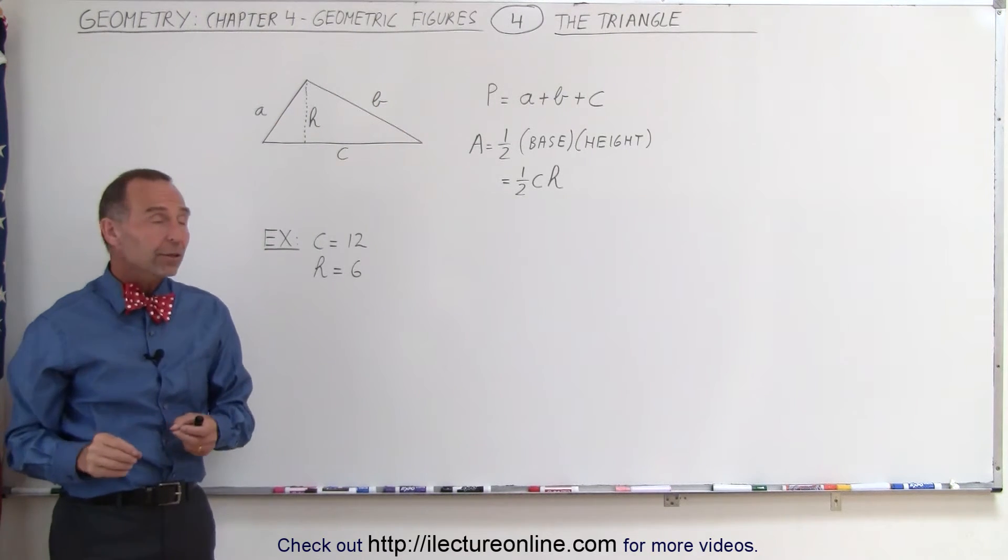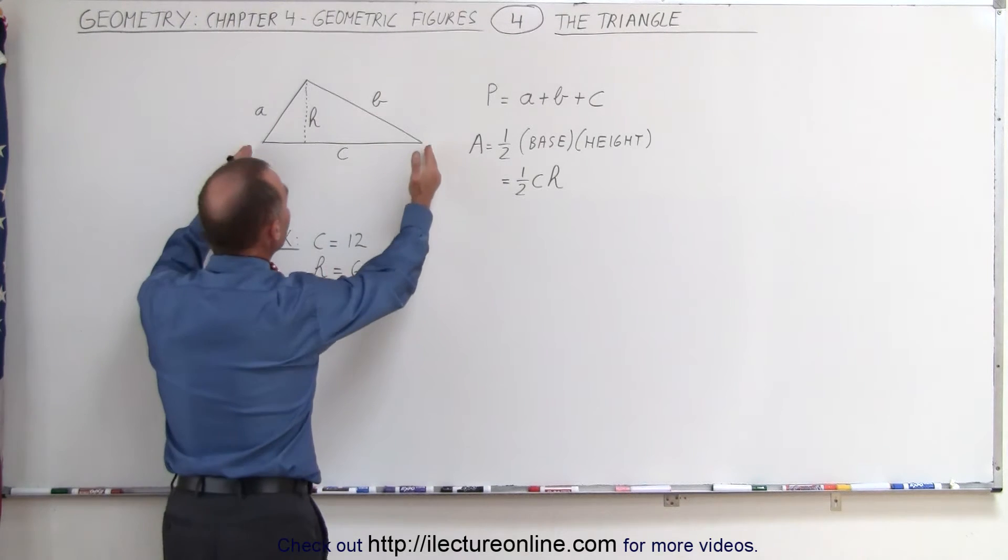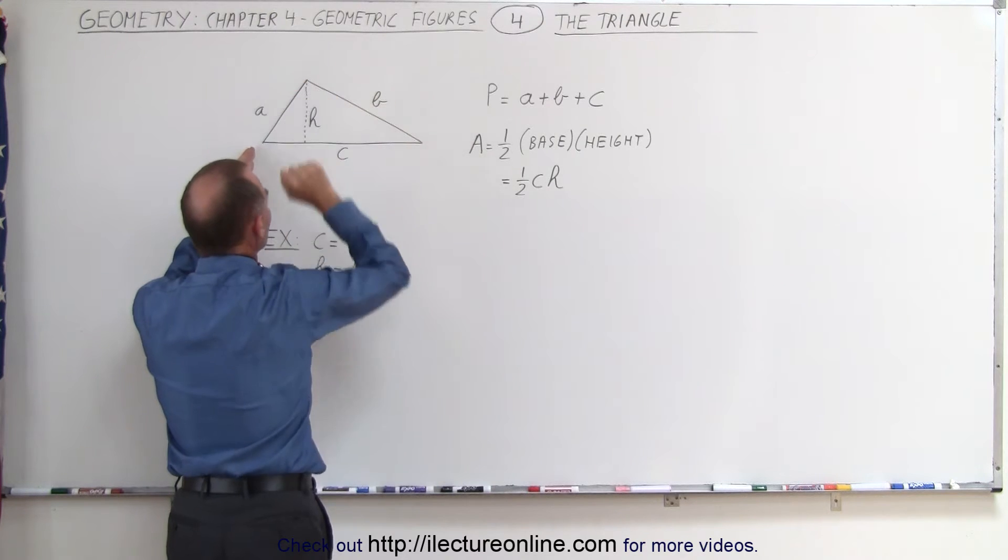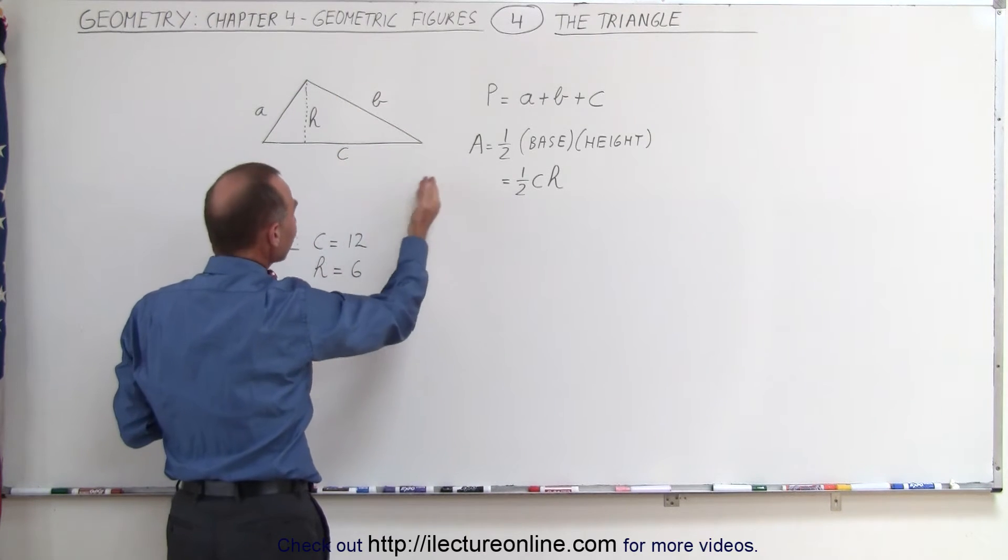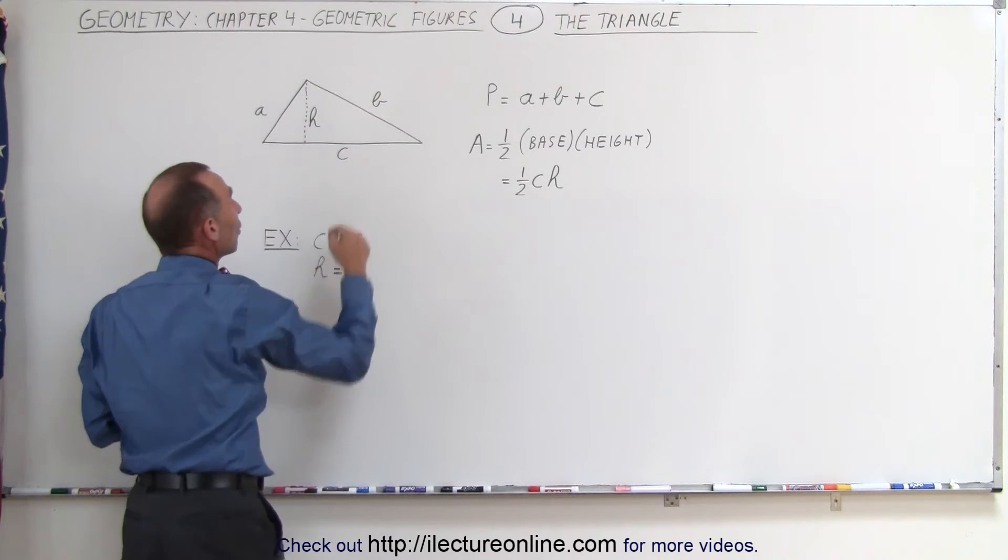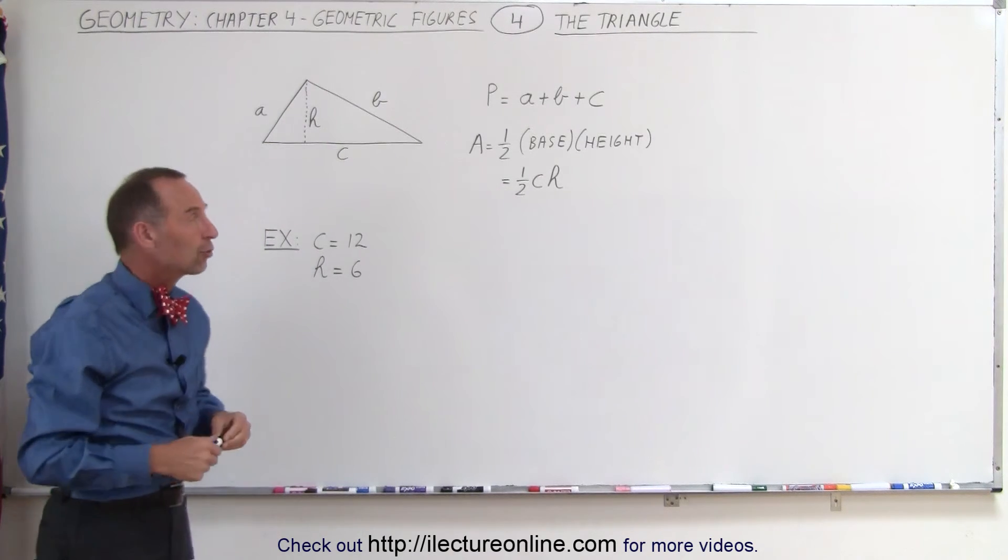To find the area, it is equal to half the length of the base, which is the side at the bottom of the triangle, times the height. In order to find the area, of course, we need to be also given the height. If all they give us is simply the three sides, we're not going to find the area of the triangle.